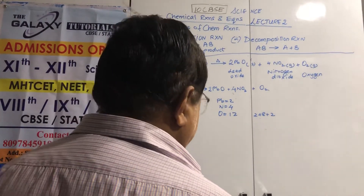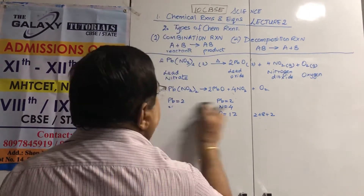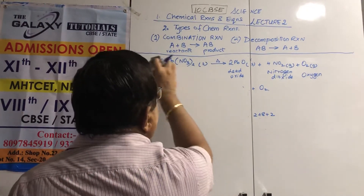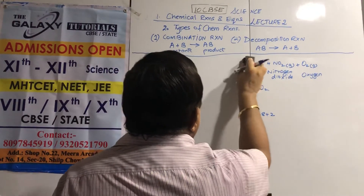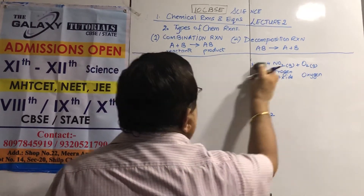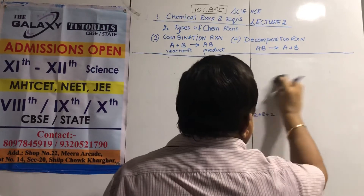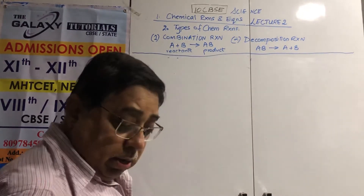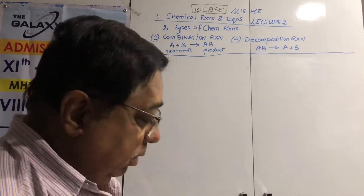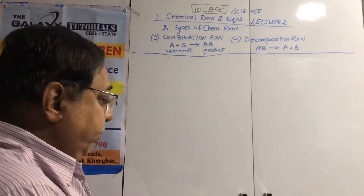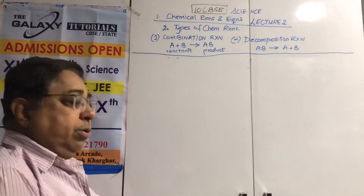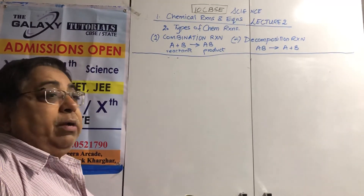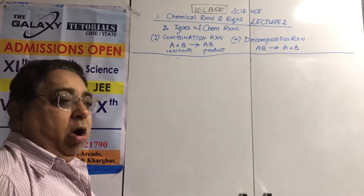This is the lead nitrate reaction. When heated, gases come out and lead oxide is formed. Lead oxide is used to paint post boxes — that characteristic orange-red color.